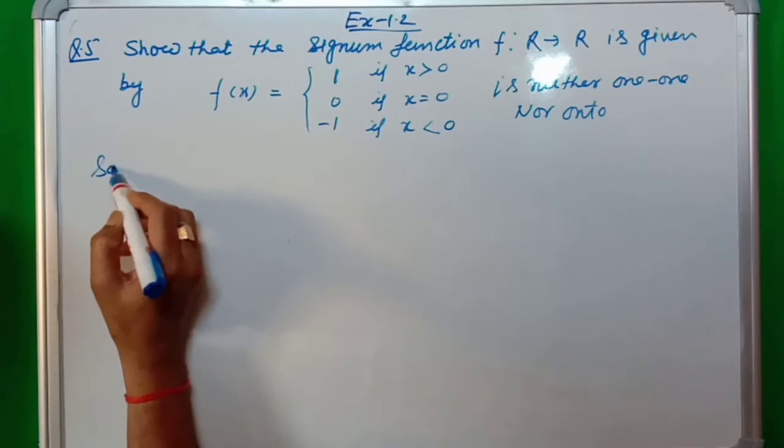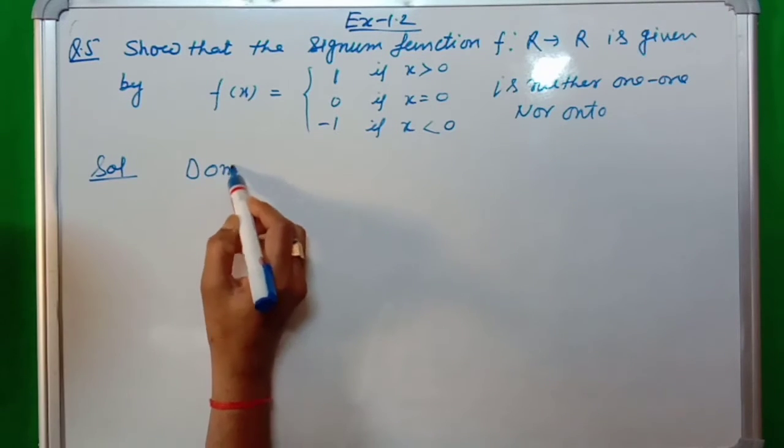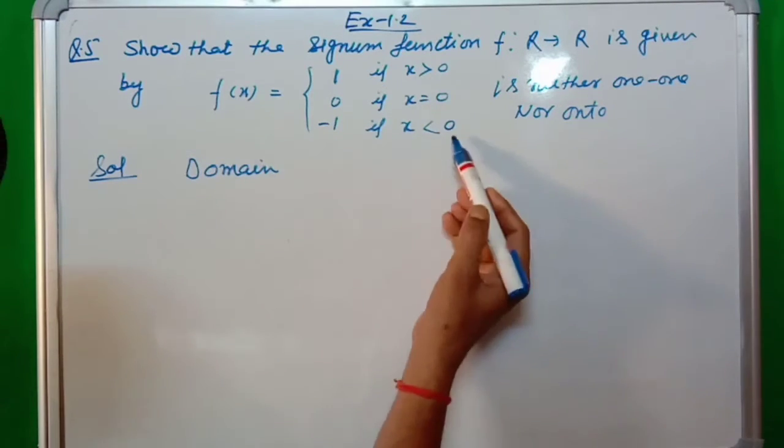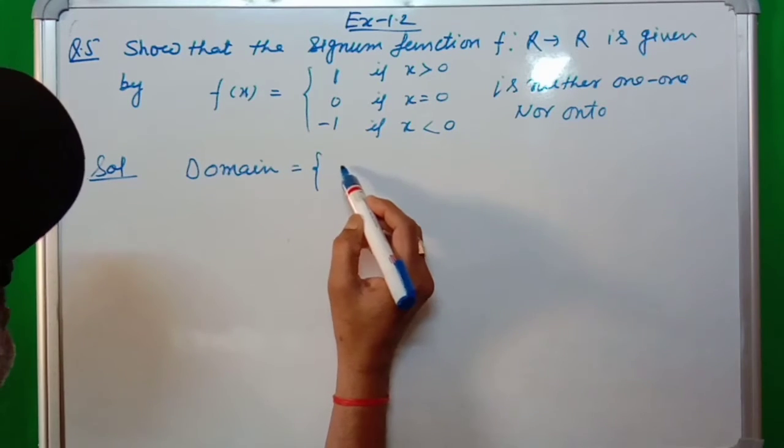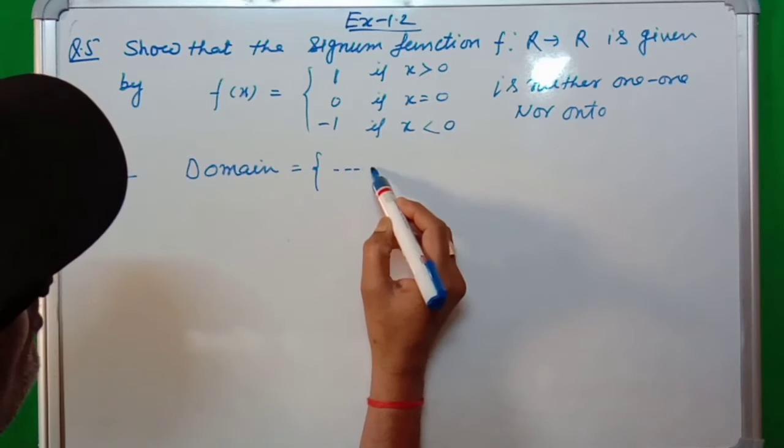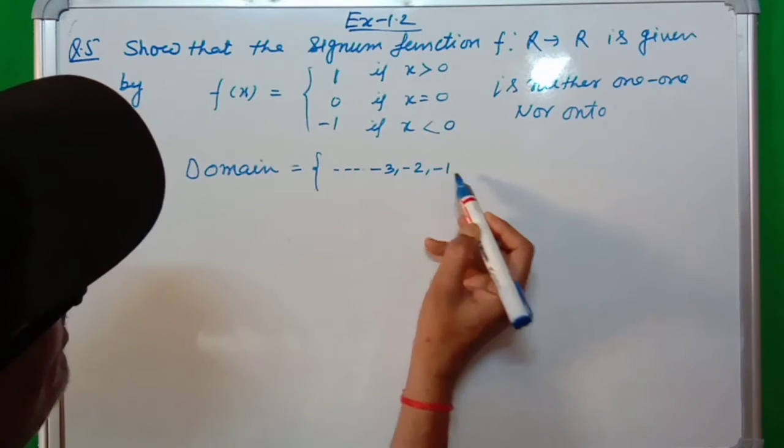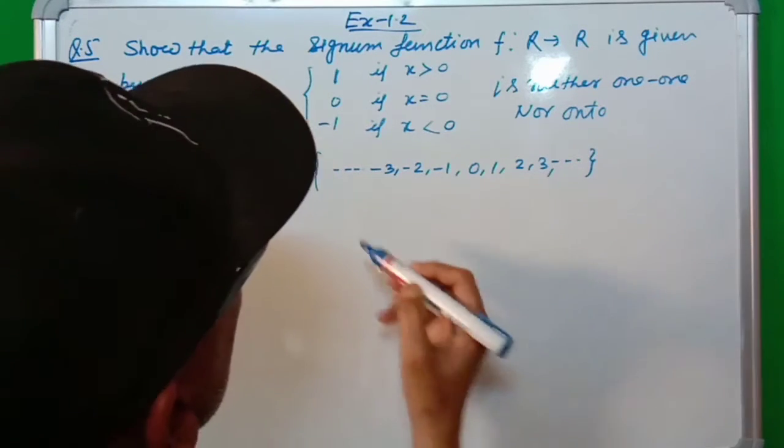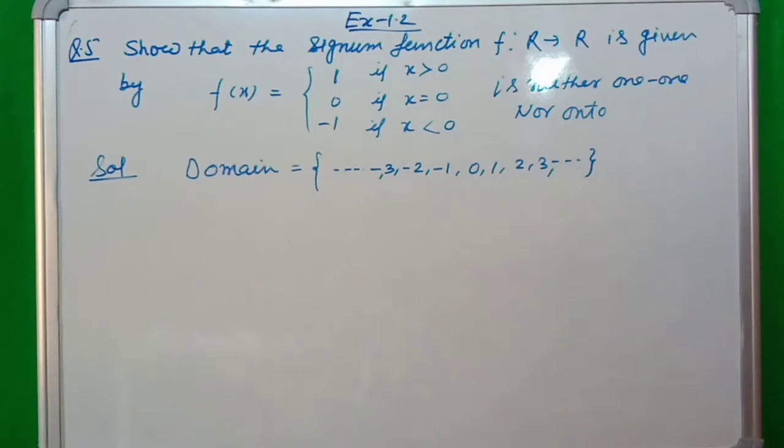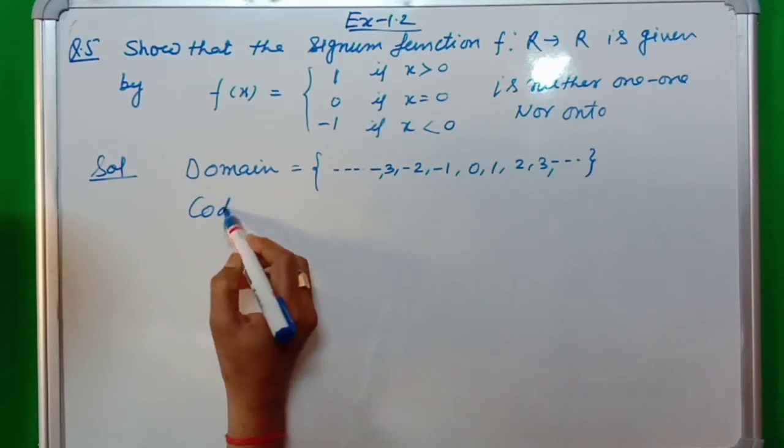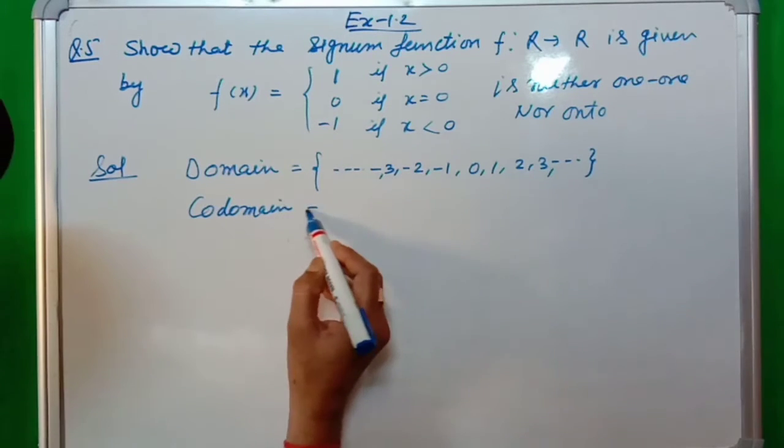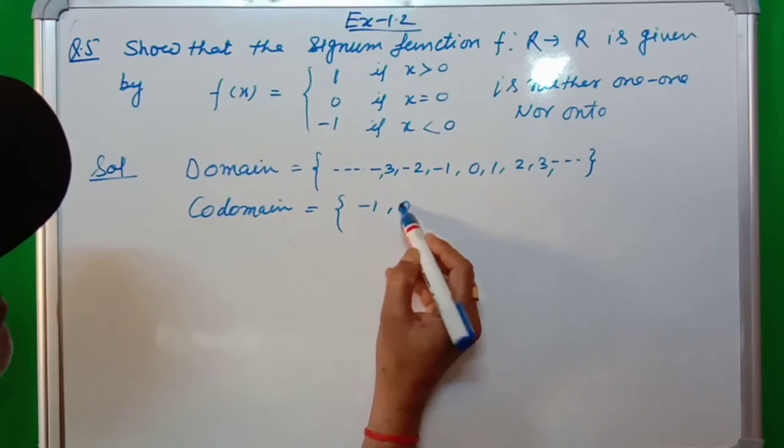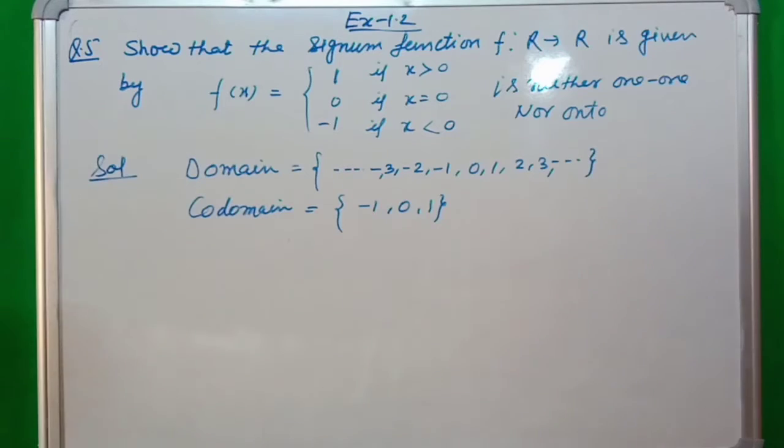Now students, we will see the domain. Domain is greater than zero or less than zero... minus three, minus two, minus one, zero, one, two, three. This is the domain and this is codomain. Codomain is equal to the f(x) value: codomain is minus one, zero, or one.